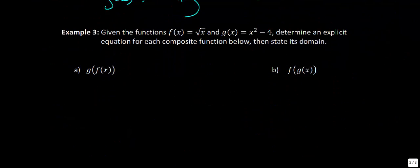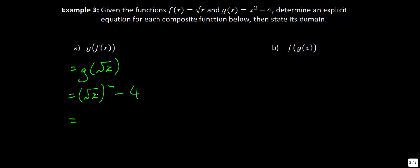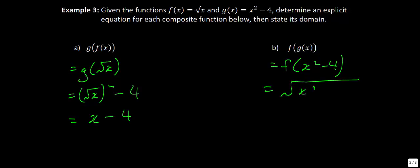Example 3: very similar. We find the explicit equation for each composite function. For g of f of x: we have g of square root of x, substituting into x squared minus 4 gives (square root of x) squared minus 4. Since squaring a square root cancels those terms, we get x minus 4. For f of g of x: we substitute g of x into f, giving the square root of (x squared minus 4).